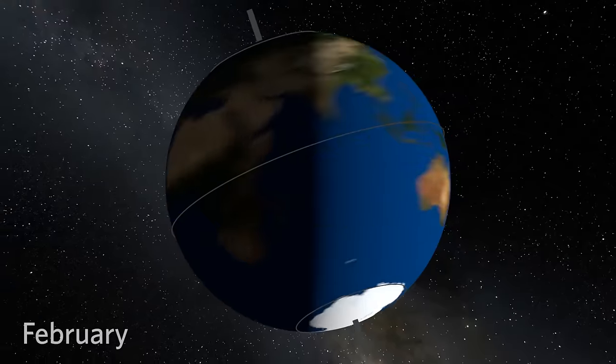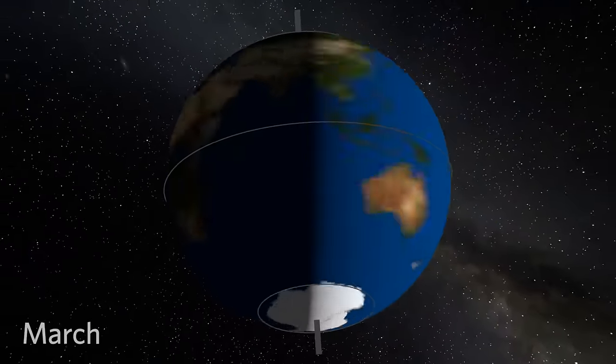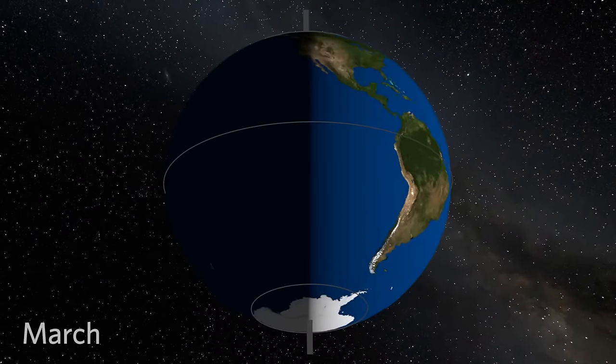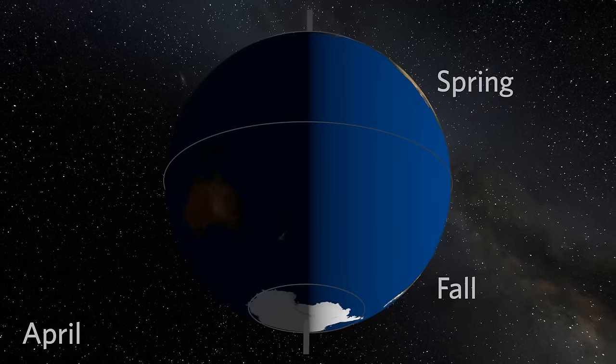As Earth orbits the Sun, we move towards spring in the Northern Hemisphere. Now Earth is tilted neither toward nor away from the Sun, as day and night are about equal in length.